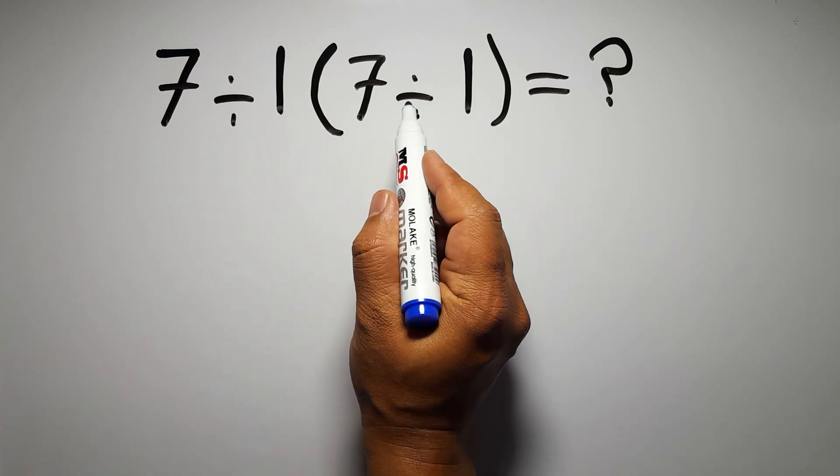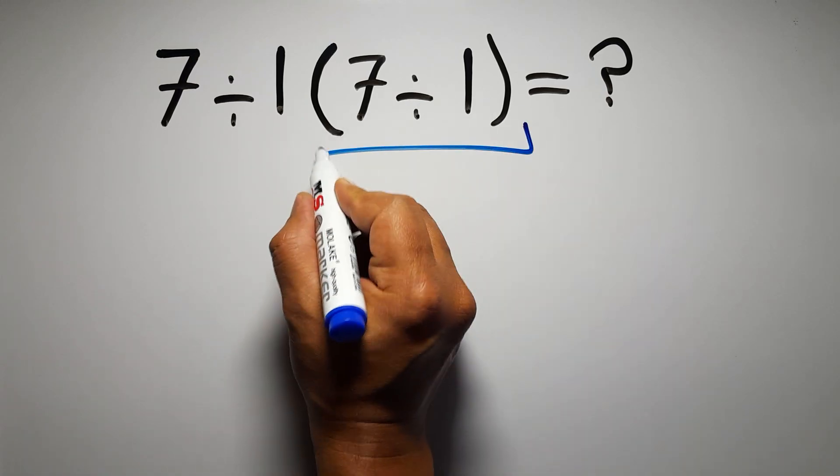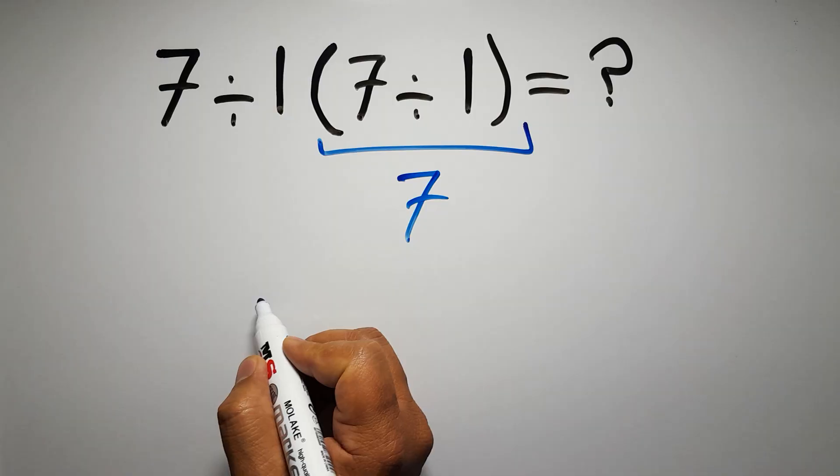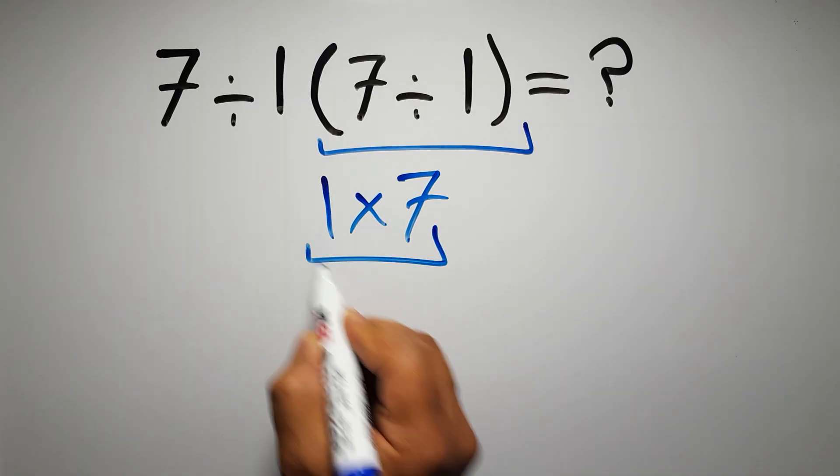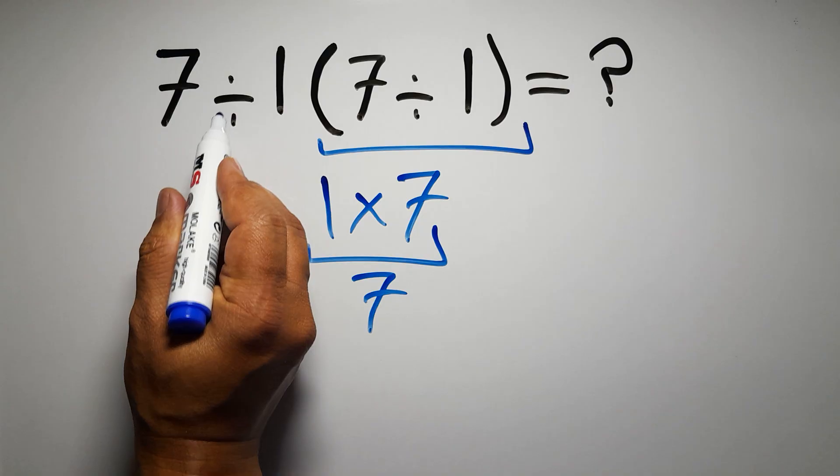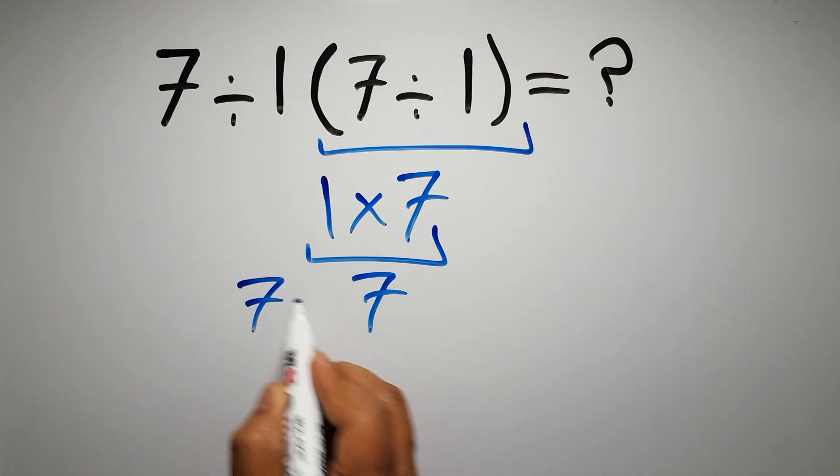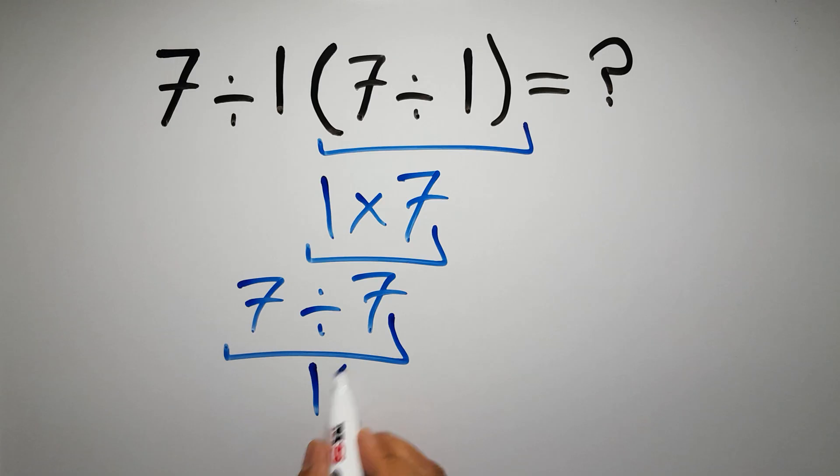Inside these parentheses we have 7 divided by 1 which equals 7, so 1 times 7 gives us 7, and 7 divided by 7 gives us 1. But this answer is not correct.